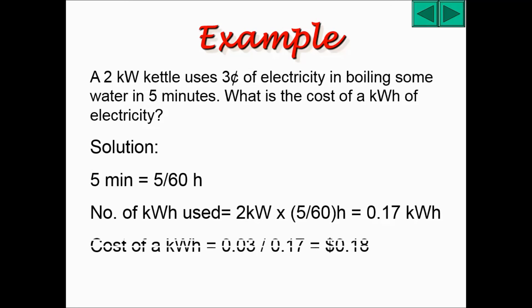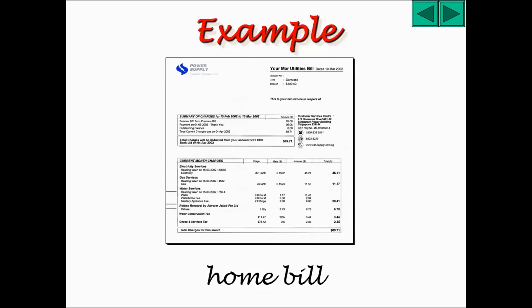For the last part, the cost of a kilowatt hour will be equal to 3 cents divided by the number of kilowatt hours used, which is 0.17. And that will get you 18 cents. This is an example of your home bill.